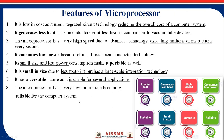These are the features of microprocessor. First, it is low in cost because it reduces the overall cost of a computer system — it is a single integrated circuit. It generates less heat because the microprocessor is made up of semiconductor material, which generates less heat compared to vacuum tube devices. Microprocessor has very high speed due to advanced technology — it executes millions of instructions every second. It is developed by metal oxide semiconductor technology, and it has a small size, less power consumption, and is portable, making it usable in several applications.